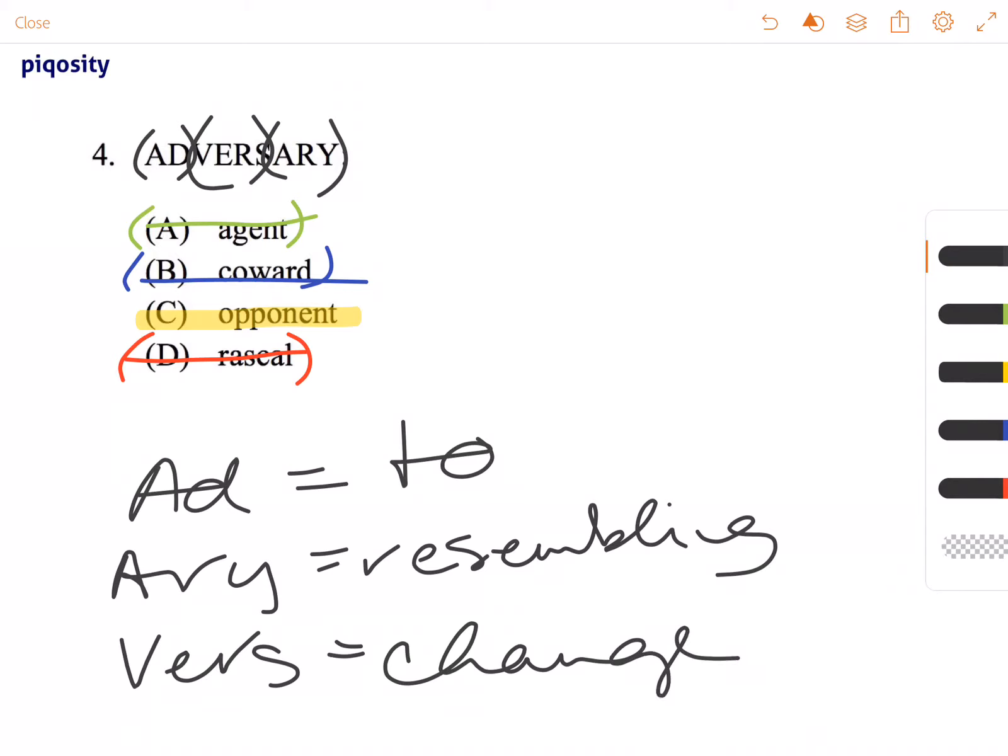So resembling changing something or turning back something, so working against. If you were to break this word down to its parts, it would actually give you a good idea of what the definition was going to be if you didn't know it but you knew what the parts of the word meant. But just remember that your adversary is C, your opponent in things.